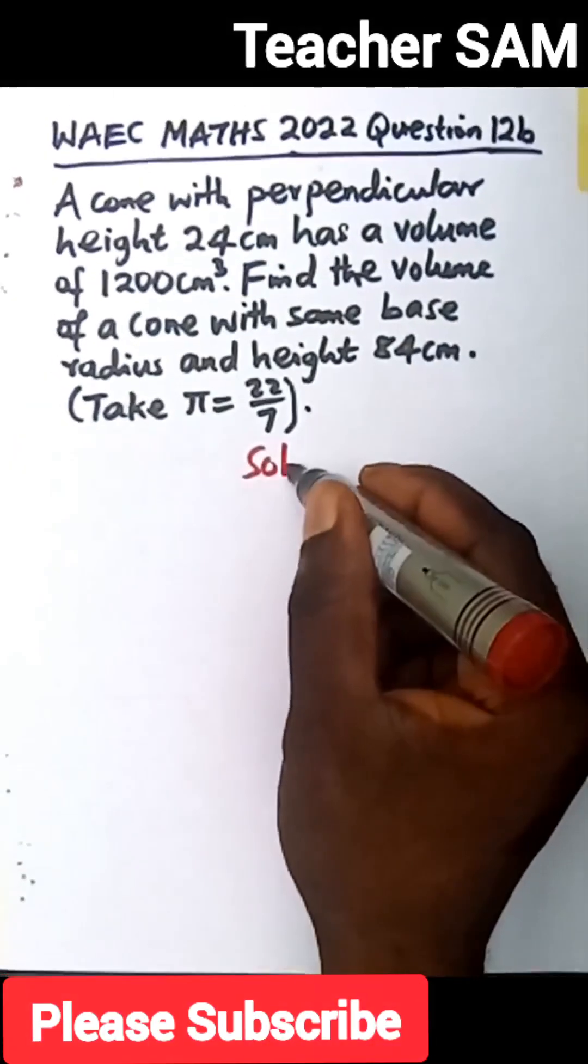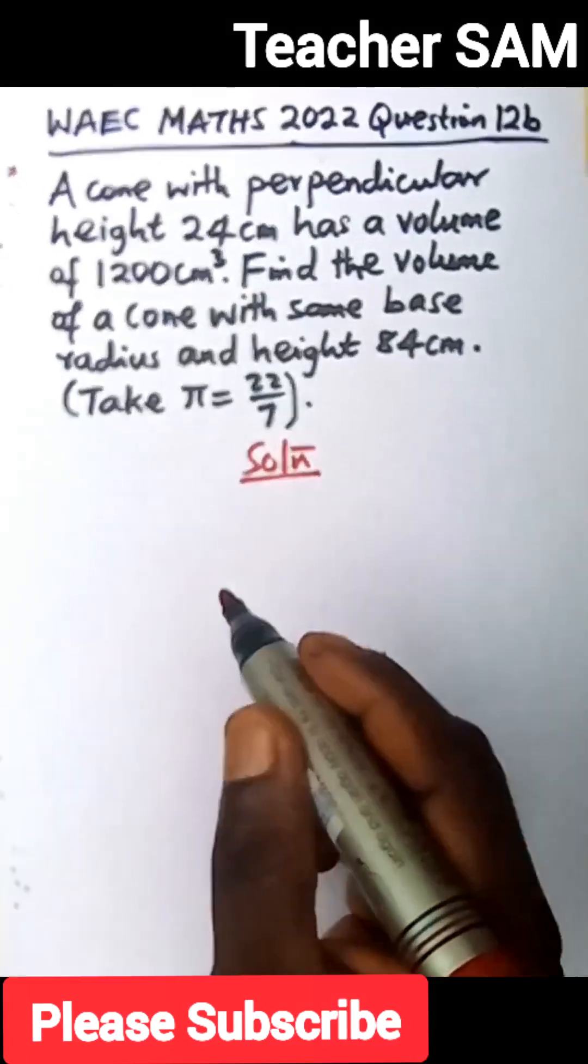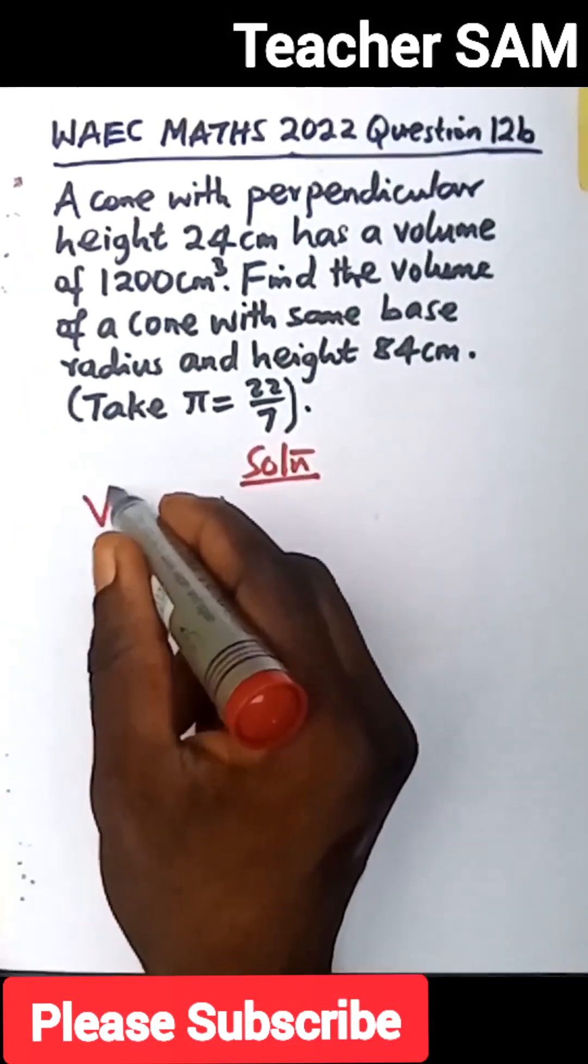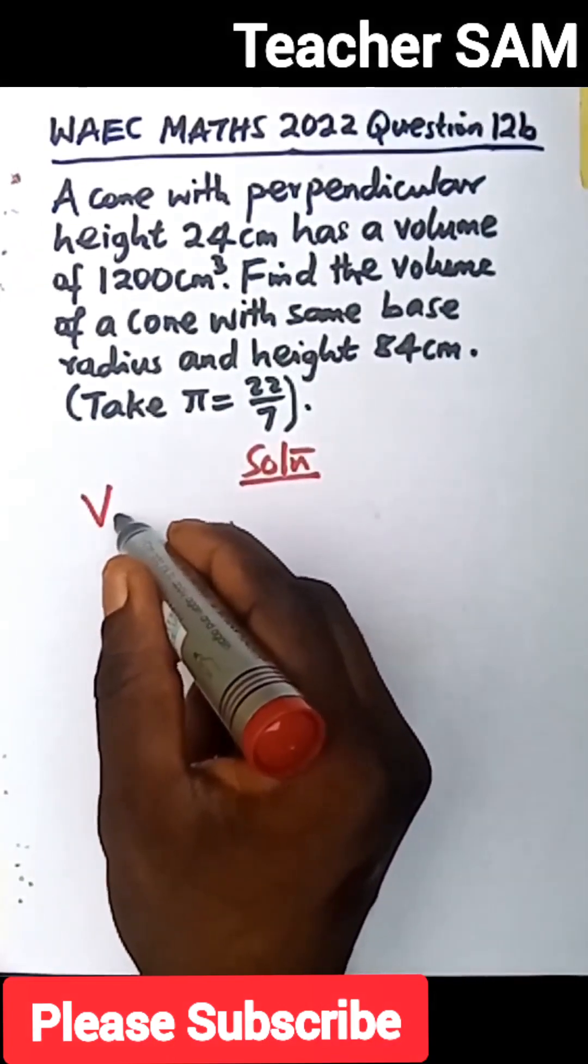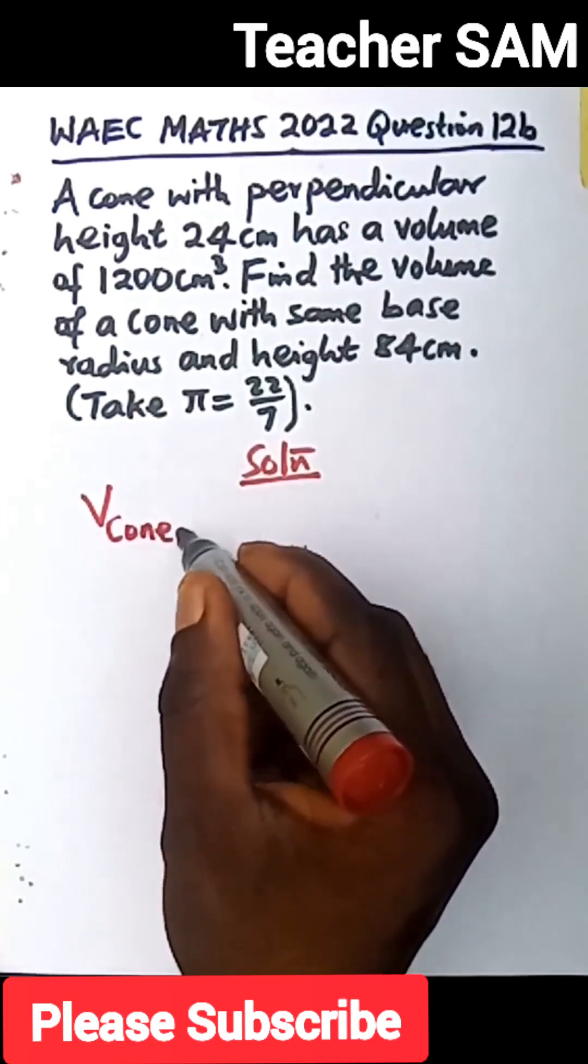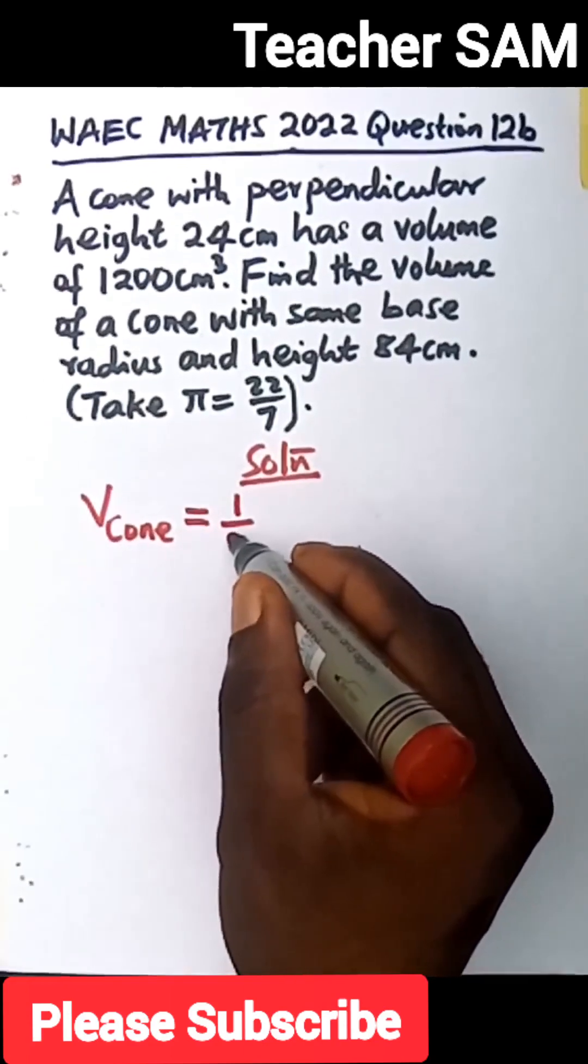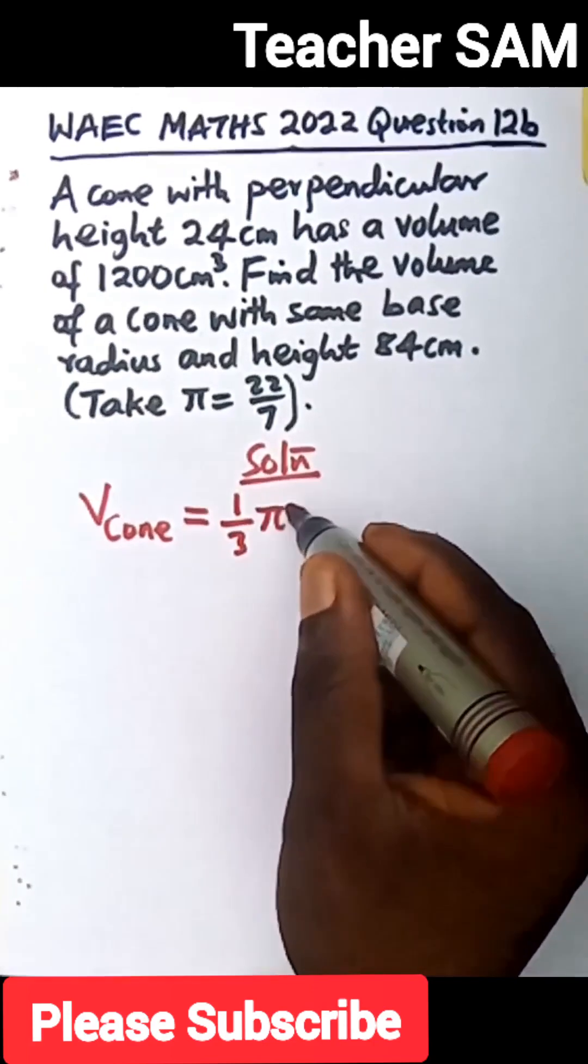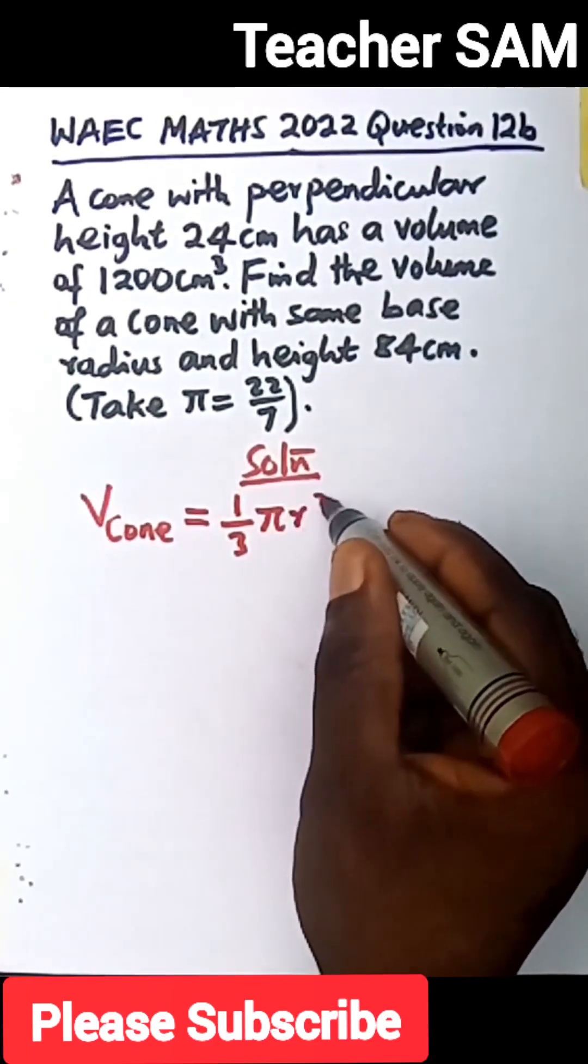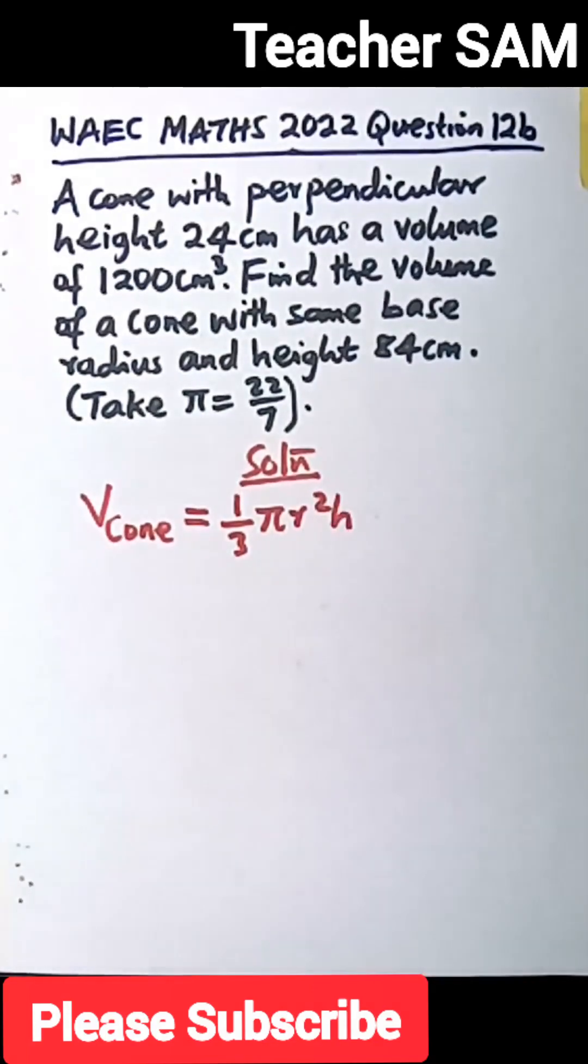Solution. We know that the volume of a cone is equal to 1 over 3 pi radius squared h. That is the volume of a cone.